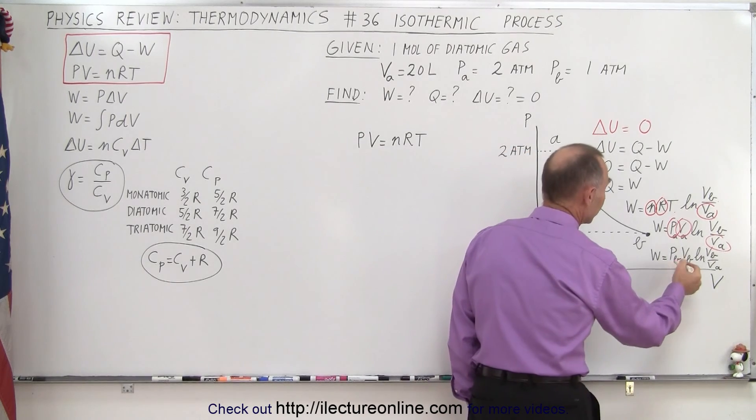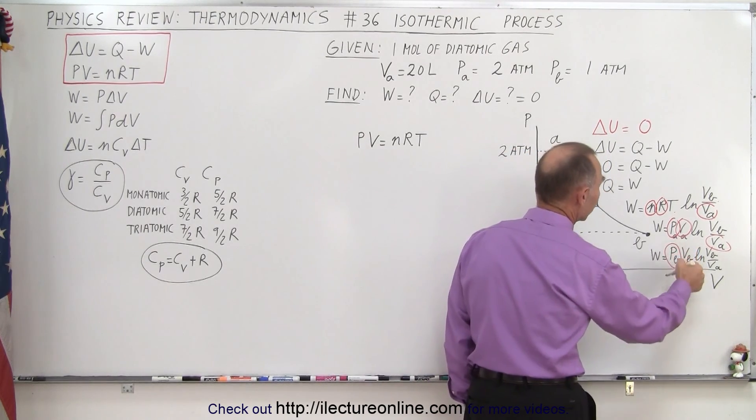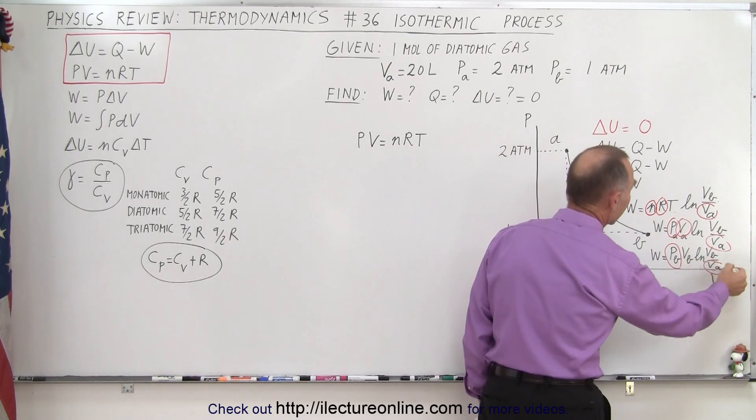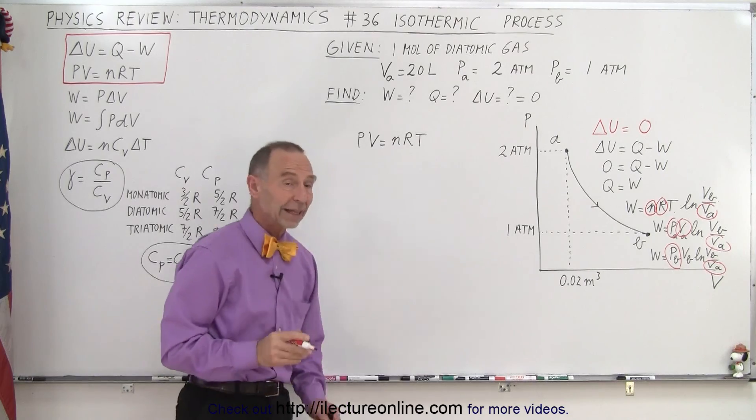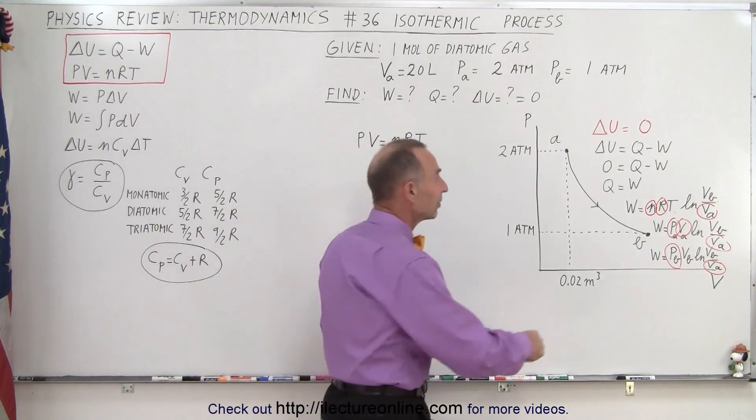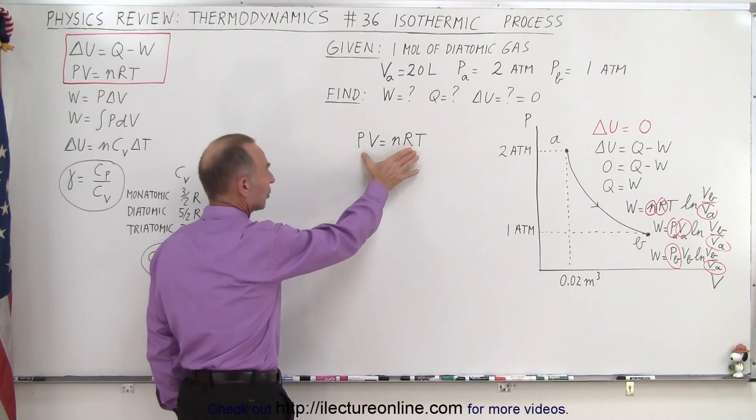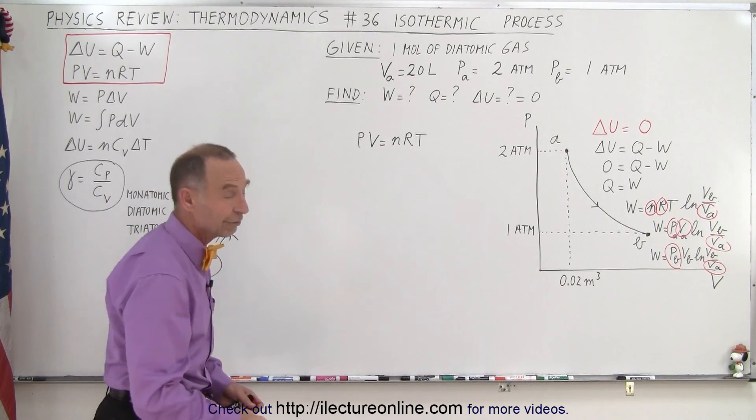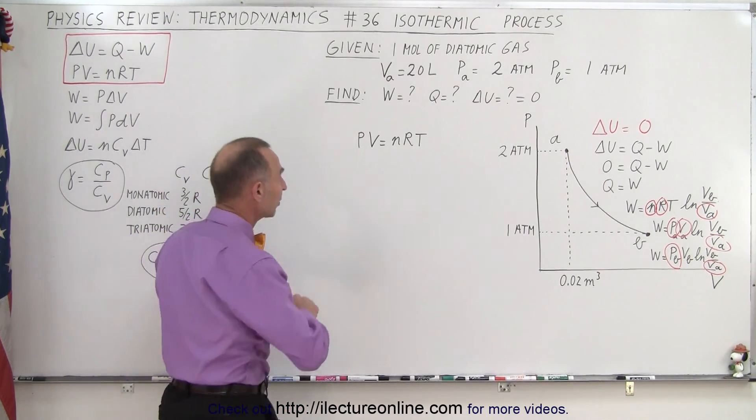And over here, we do know the pressure at B. The pressure at B is one atmosphere, but we don't know the volume at B. We know the volume at A, but not at B. So neither one of those three equations at this point can be used to find the work done until we find the temperature and the volume at B. How do we do that? We use the ideal gas equation to find both the temperature and the volume at B.